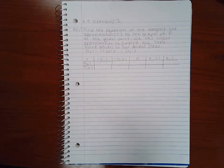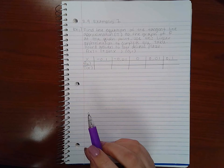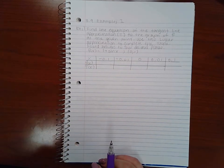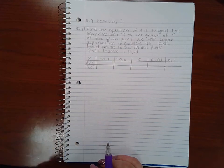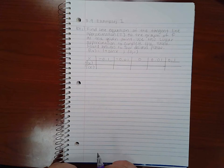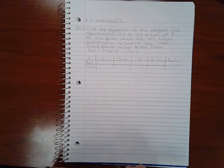This video is 3.9, the first example on differentials. Find the equation of the tangent line approximation T to the graph of f at the given point. Use this linear approximation to complete the table, rounding answers to four decimal places. The function is f(x) = 1 + sin(x) and the point is (0, 1).